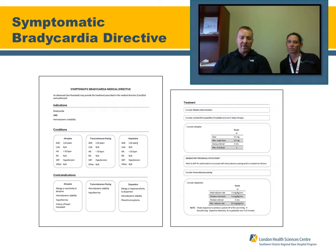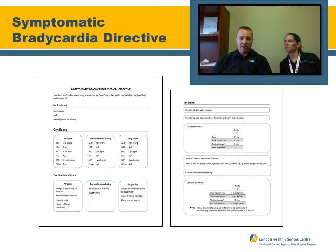The symptomatic bradycardia medical directive addresses atropine, pacing, and dopamine. All patients must be 18 years of age or older and hypotensive. For atropine, no patch is required; two doses of 0.5 milligrams each may be given with a two-minute interval between them. Transcutaneous pacing or dopamine require a patch.